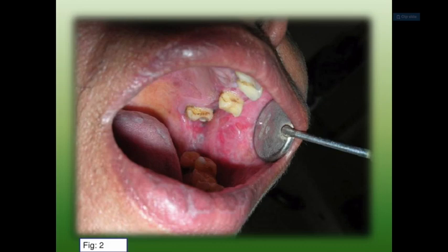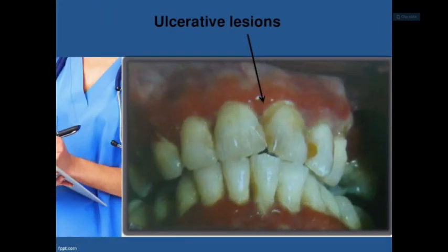Within the keratinocytes, certain bodies known as colloid bodies, civatte bodies, or hyaline cytoid bodies can be observed. These form when keratinocytes being keratinized degenerate as they move from the basal to the surface layers, clumping together to appear as homogeneous eosinophilic globules when stained. These degenerating basal keratinocytes leave a gap within the epithelium, appearing as a histologic cleft known as Max Joseph spaces.